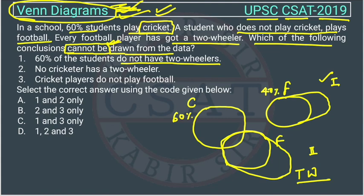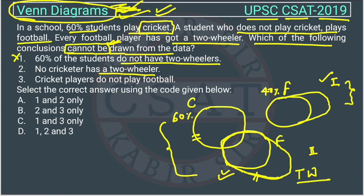From the diagram, if there are students playing cricket who also have a two-wheeler, then the statement 'no cricketer has a two-wheeler' would be wrong. We cannot be certain about this conclusion — if a case exists where cricket players have two-wheelers, then we cannot conclude with certainty that no cricketer has a two-wheeler. So this conclusion is considered wrong because we cannot make it definitively.